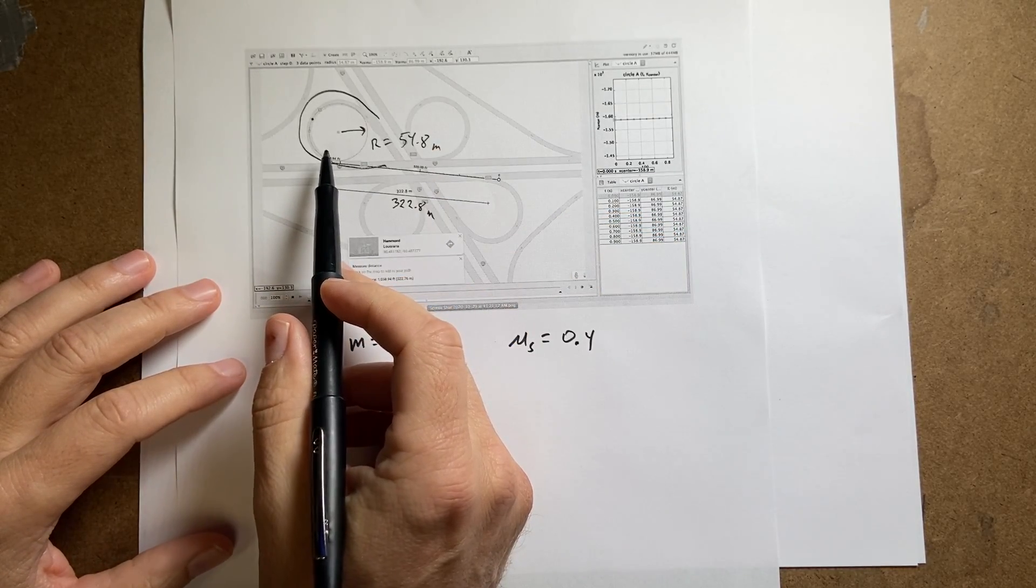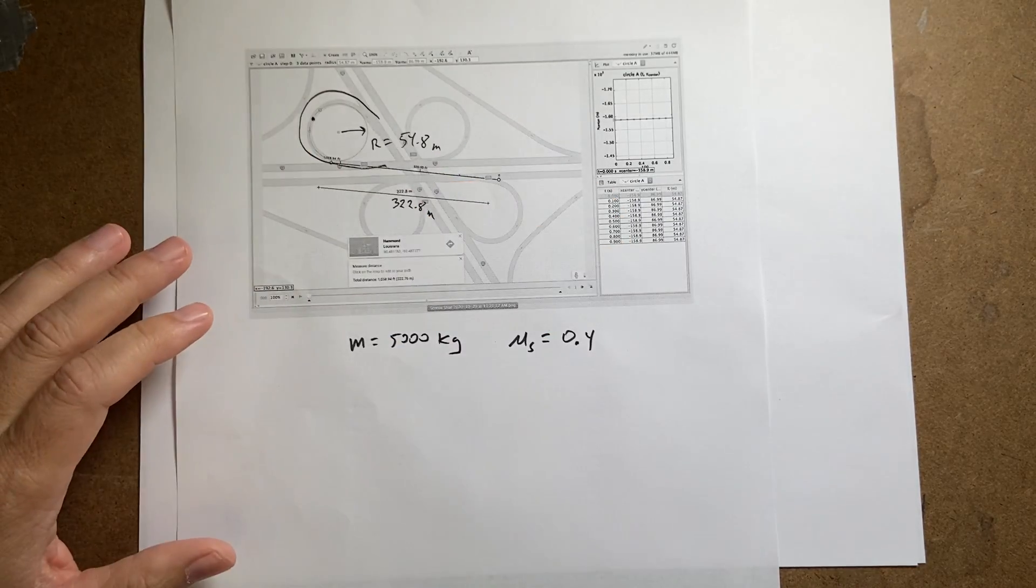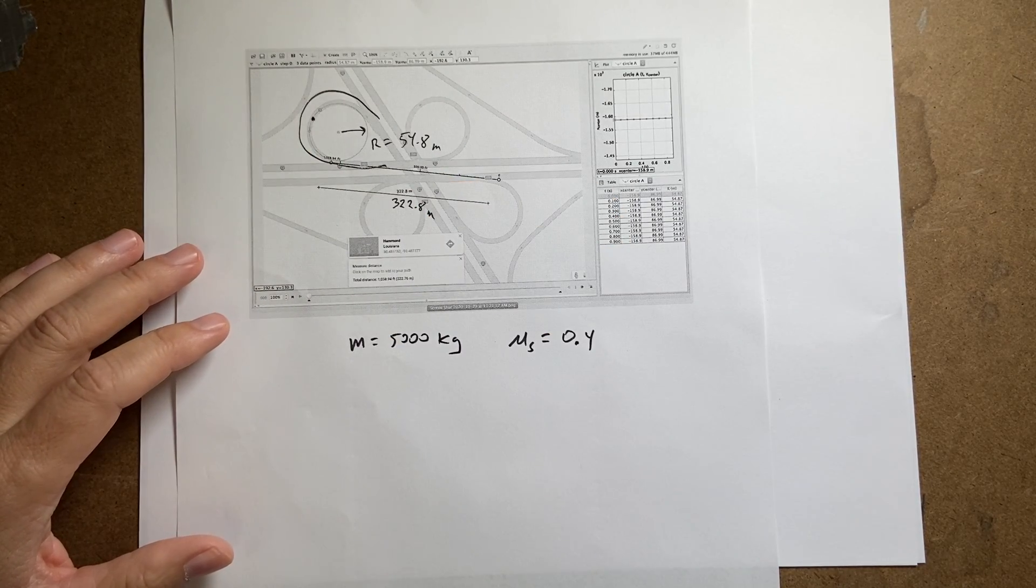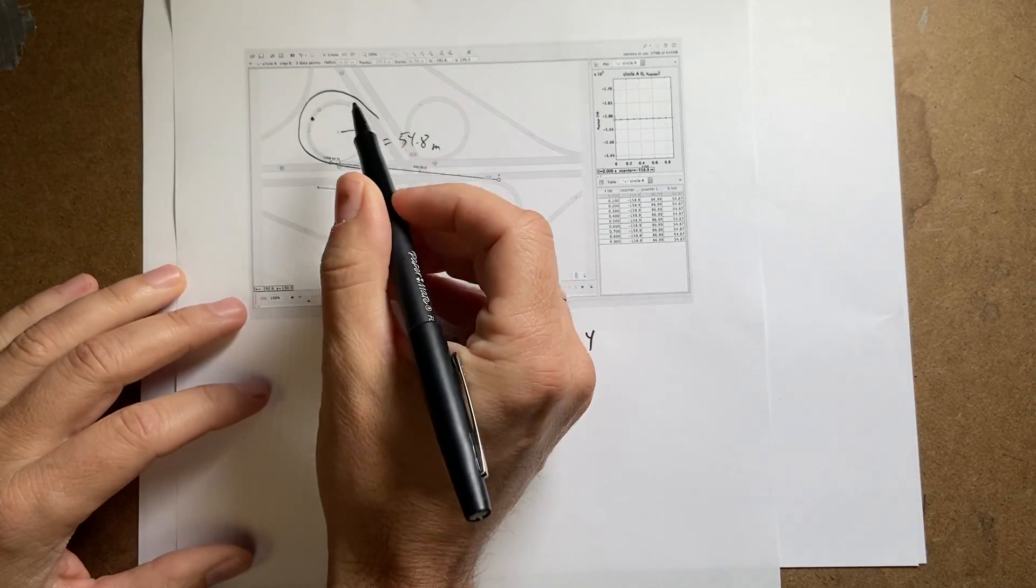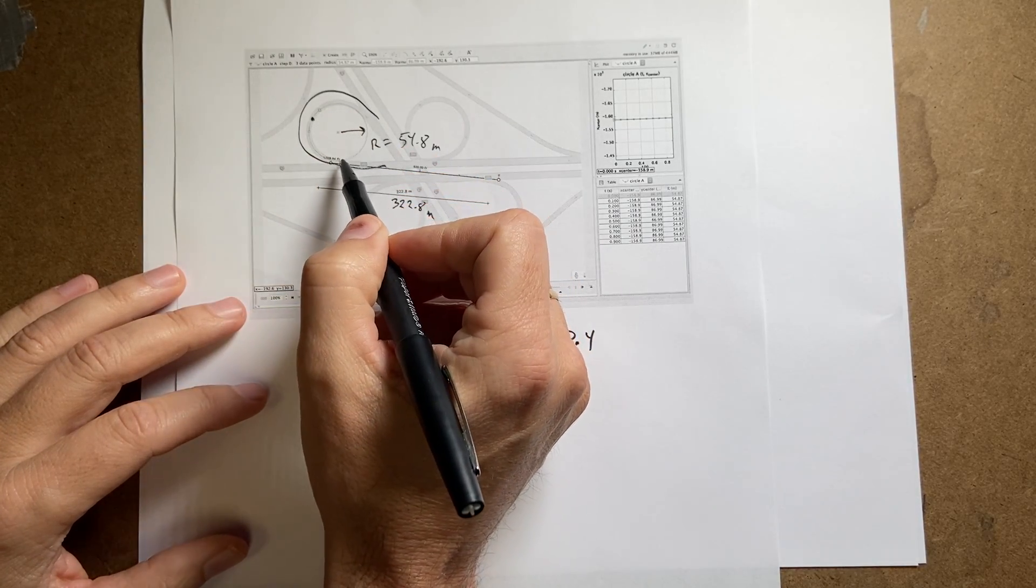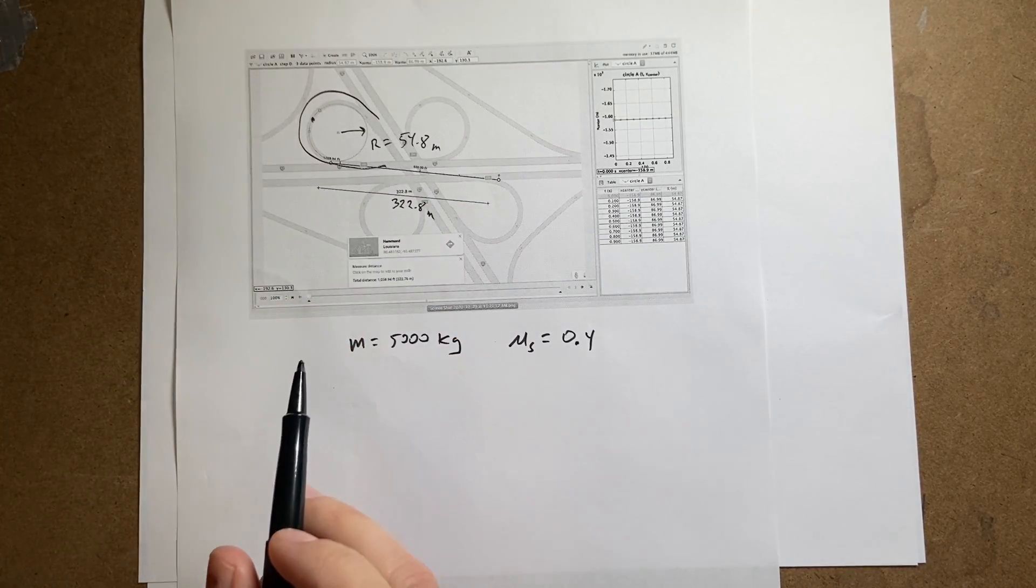So the first thing I need to do is to find the speed at that point. I need to know as though it were moving in a circle. So this circle is, I fit this circle in here to find the radius of curvature at that point. It's different at different points.